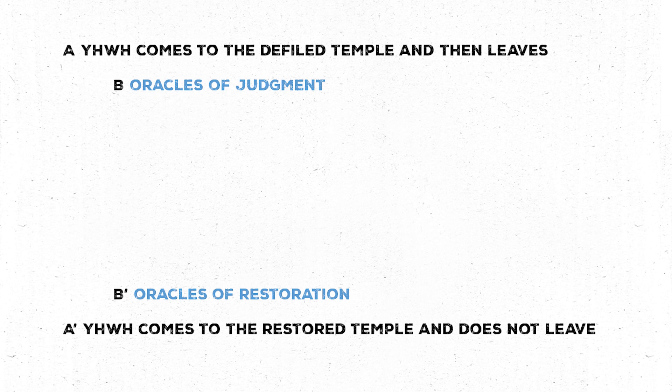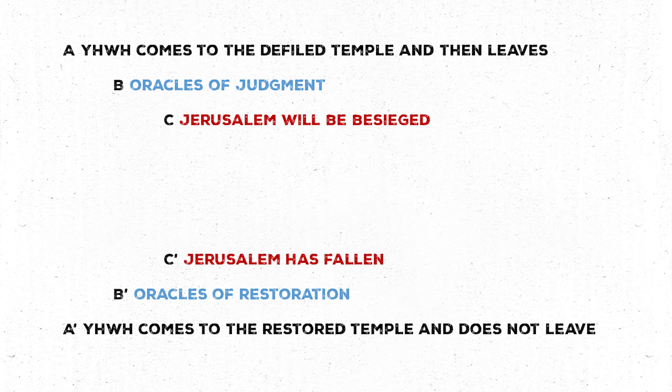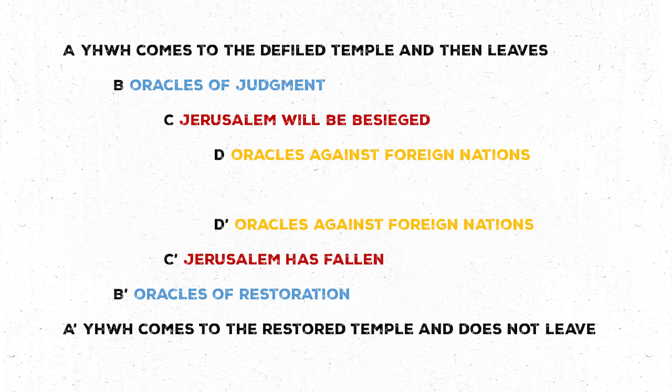The next kind of chiastic structure comprises not just a story or a cycle, but an entire book. A great example is the book of Ezekiel. It starts with the Lord coming to the defiled temple for investigative judgment and then departing in chapters 1–11, and ends with the Lord coming to the restored temple and not departing in chapters 40–48. Chapters 12–23 have oracles of judgment, parallel to oracles of restoration in chapters 34–39. In chapter 24 we learn Jerusalem will be besieged; in chapter 33 that the city has fallen. In the middle are chapters 25–32 — oracles against foreign nations — and at the very heart of those oracles, and therefore the entire book, is the judgment on the fallen cherub in chapter 28:11–19. The structure points to this judgment on the one ultimately responsible for defilement and sin, showing it is the prerequisite for true restoration.